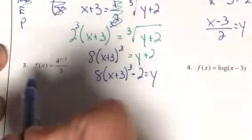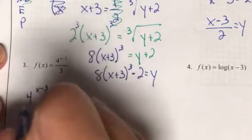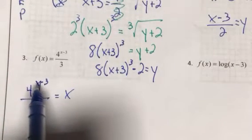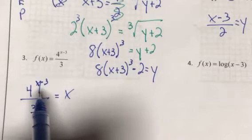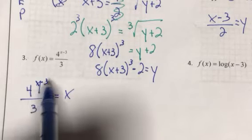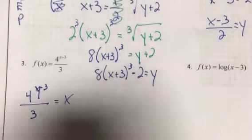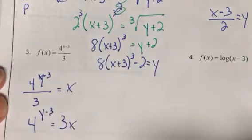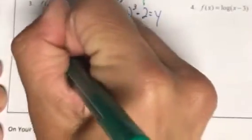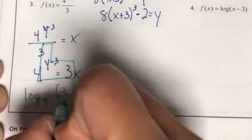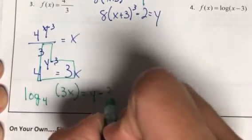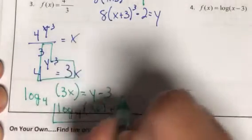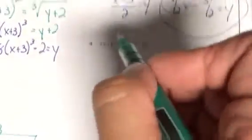For the exponential inverse: switch x and y, then isolate the base and exponent. 3 is not part of the base-exponent expression, so divide both sides by 3 to get 3x. Now convert to logarithm form: log base 4 of (3x) = y - 3. Add 3 to both sides to get y = log base 4 of (3x) + 3.